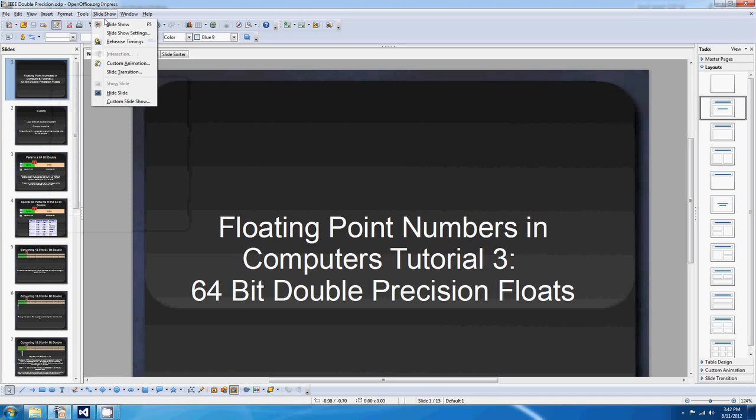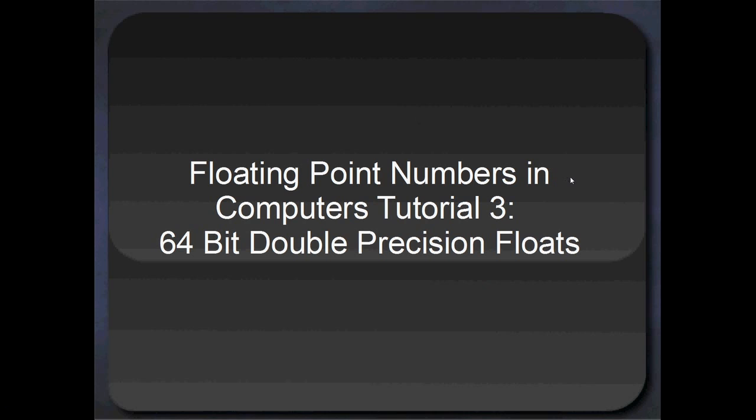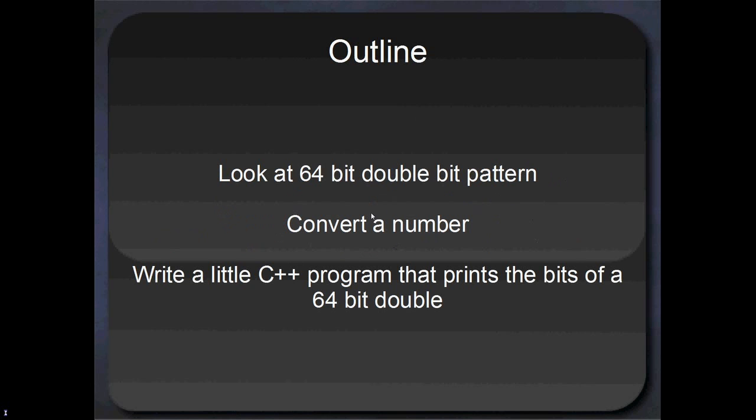G'day all, welcome to another tutorial on IEEE 754. Today we're looking at 64-bit doubles. So what we're going to do is have a bit of a look at the bit pattern, then we'll convert a number, and after that I want to write a little C++ program to print out the bit patterns. That's going to really help if you're a C++ programmer and you want to check if you're getting the right bit patterns for 64-bit doubles.